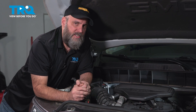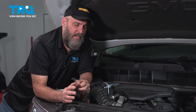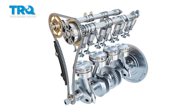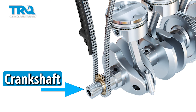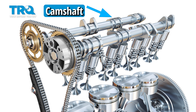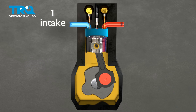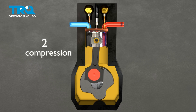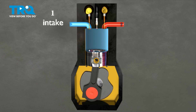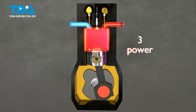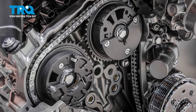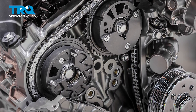In order to better understand these codes and what causes them to activate, let's talk a little bit about the mechanics behind it. An engine usually consists of two parts: a crankshaft, which is connected to the pistons in the bottom of the engine, and a camshaft, which operates the valves in the top of the engine. Those valves open and close to allow air to come in and exhaust to leave, and the camshaft is directly responsible for the timing of when all of this happens.